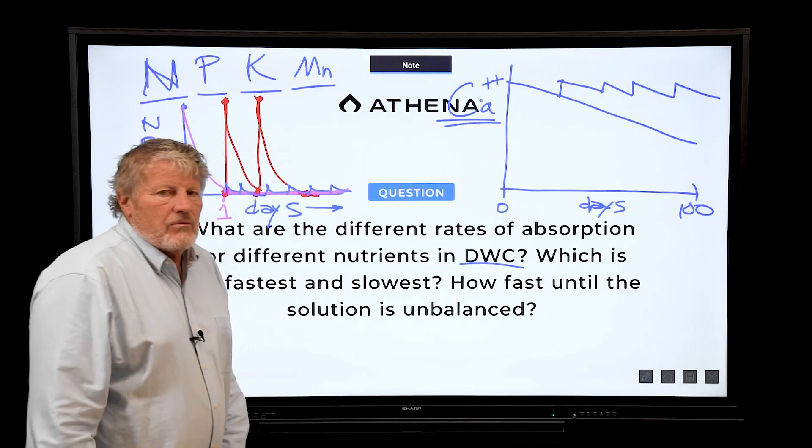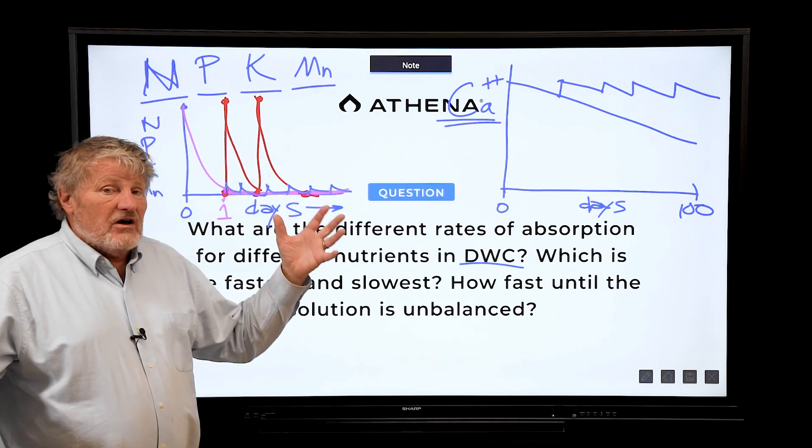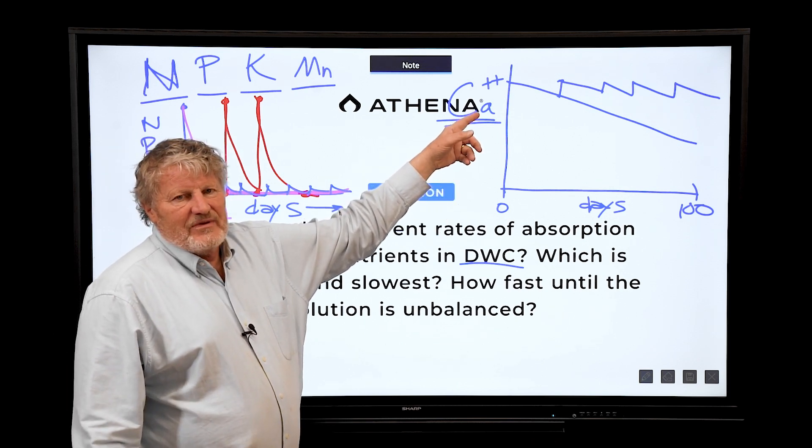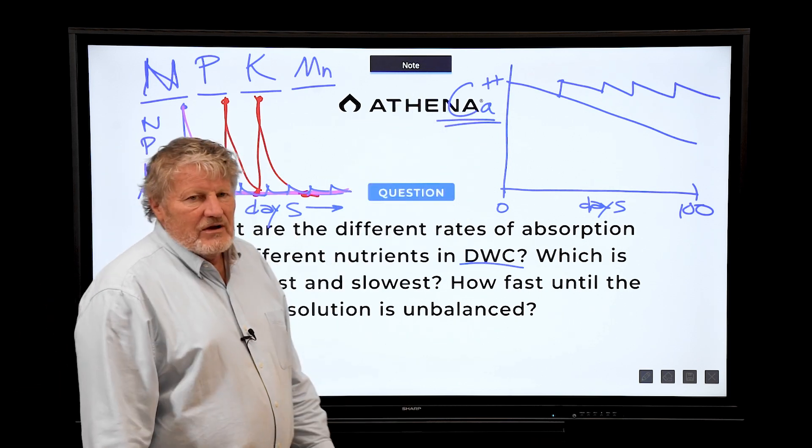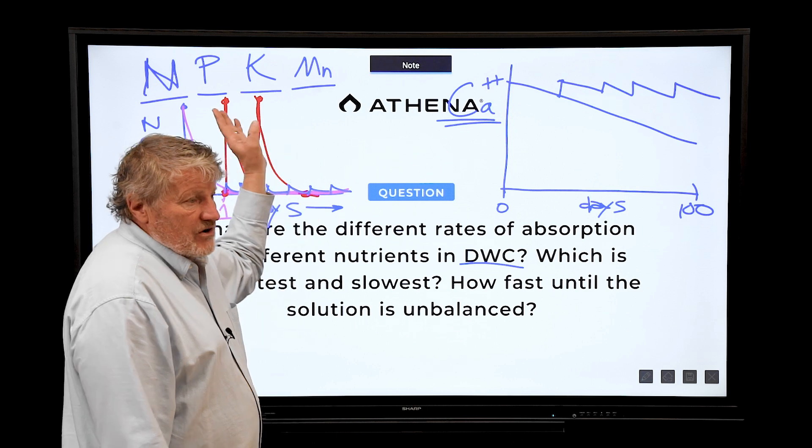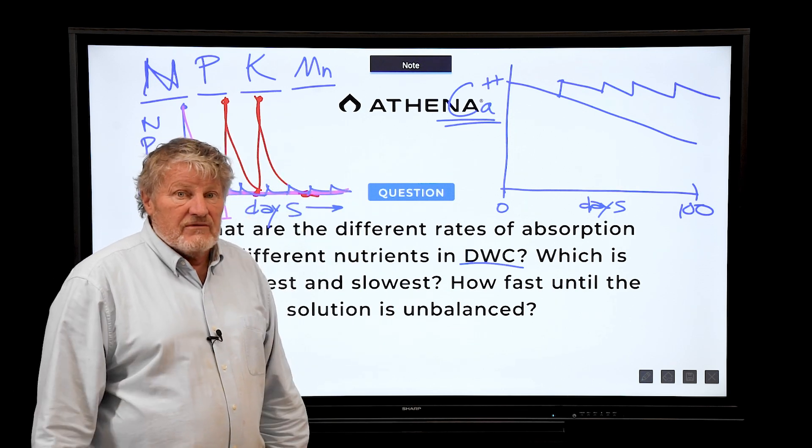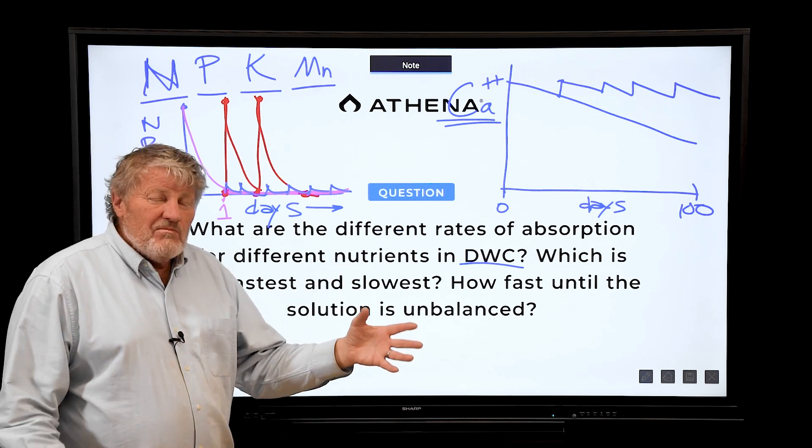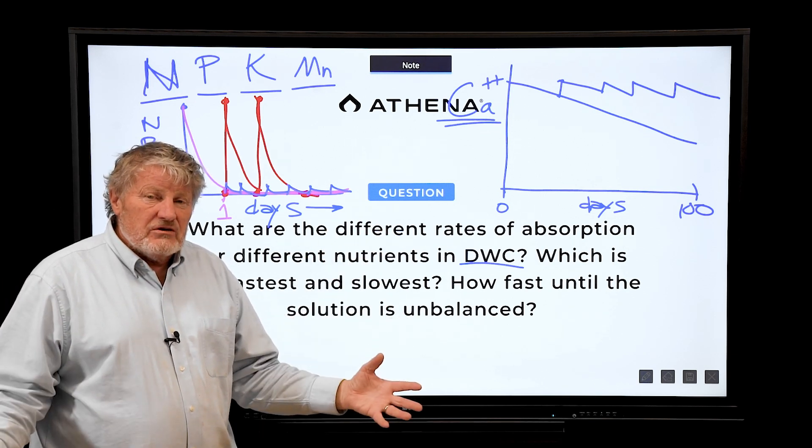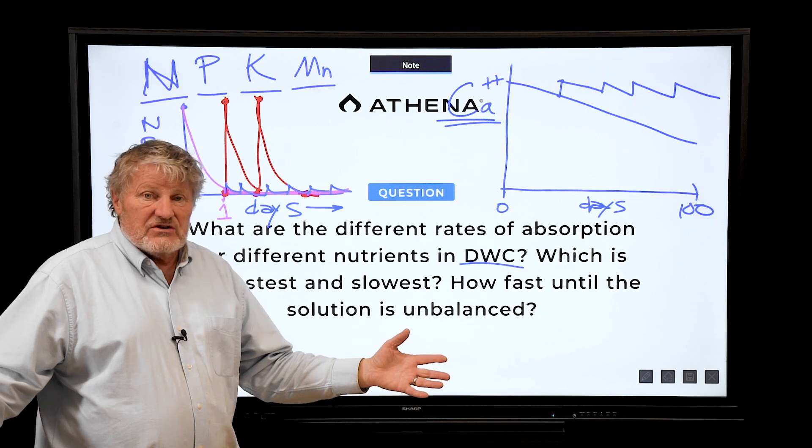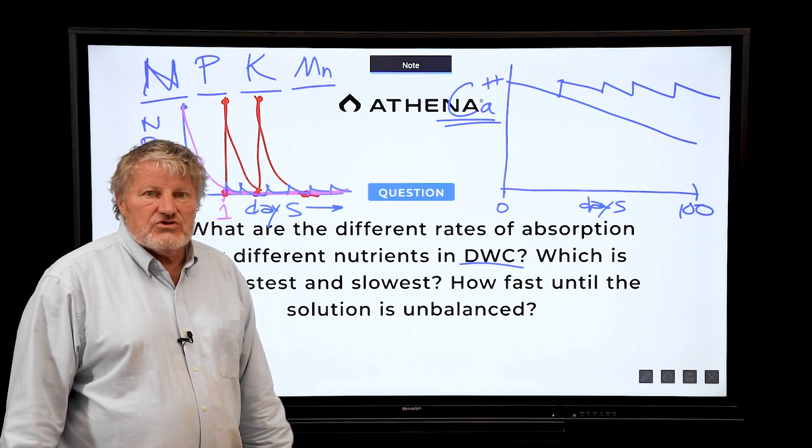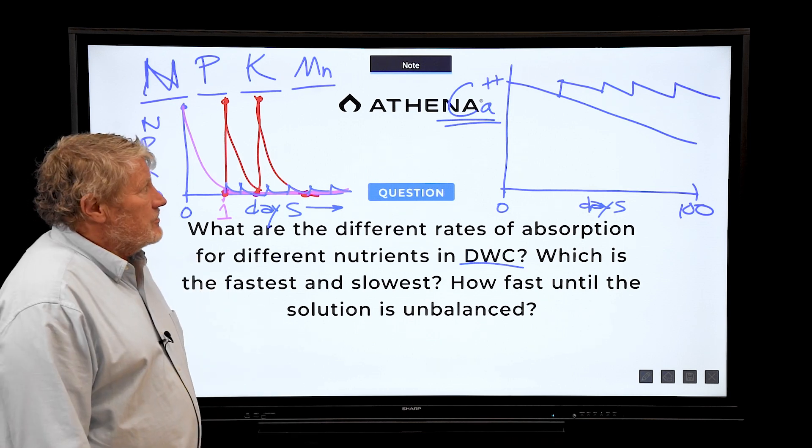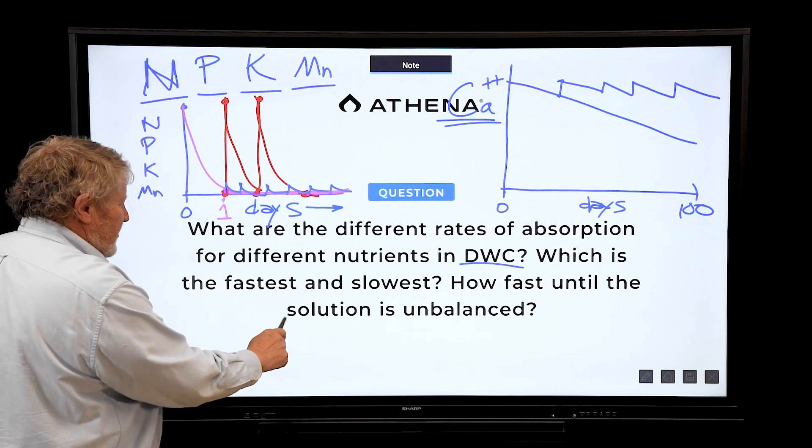All the other elements are over here. Amazing enough, with cannabis, we have evidence that the calcium is taken up very quickly. So even calcium, we have to be careful not to have too high levels in the root zone. Calcium in the leaves is optimal at about two to three percent. We've had cannabis leaves that test at 10 percent calcium. That can't be good for the plant. It's way more than the plant needs.